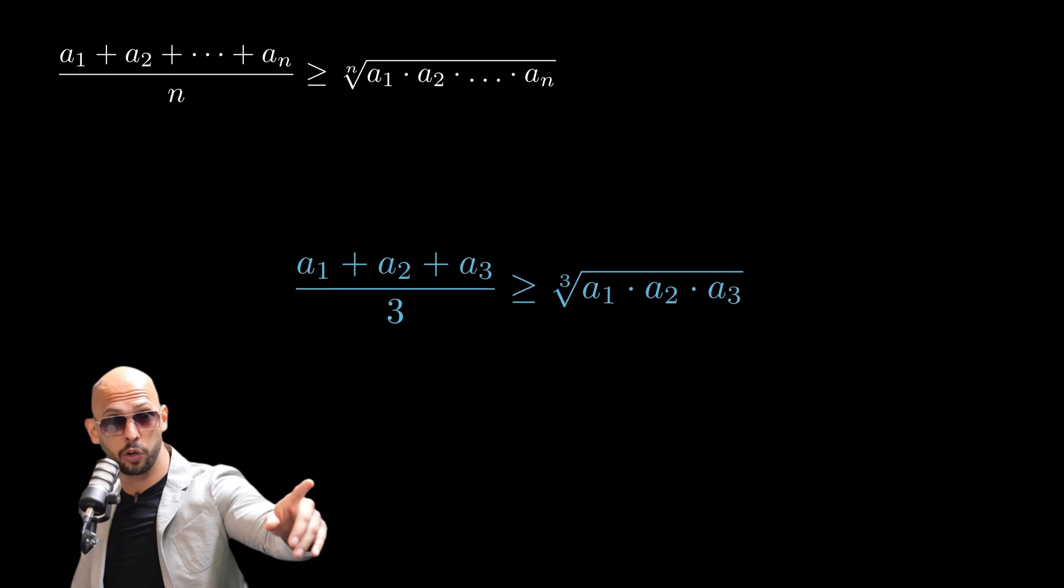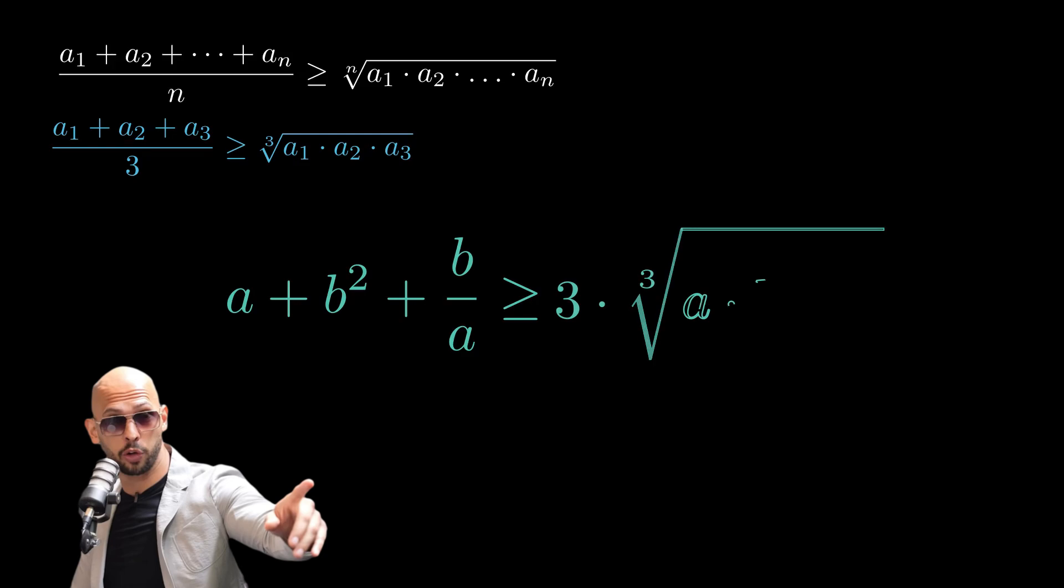All right, listen up. The left-hand side of our inequality must be larger than or equal to three times the cubic root of A times B squared times B over A. Let's tear this apart. A clear simplification must take place. The only thing left under the root is B to the power of three. The cubic root of B to the power of three is B.